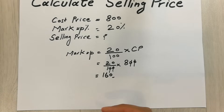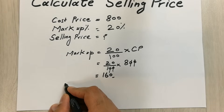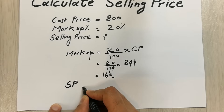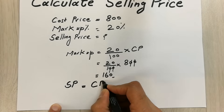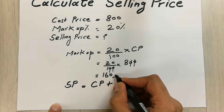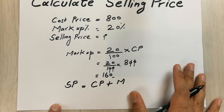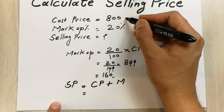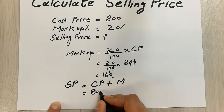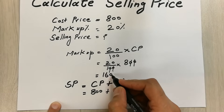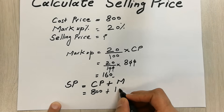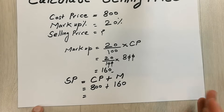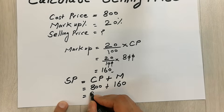In the next step, we simply apply the formula to calculate the selling price (SP). The formula is: SP = Cost Price + Markup. The cost price is 800, plus the markup we already calculated, which is 160. So our answer is 960.